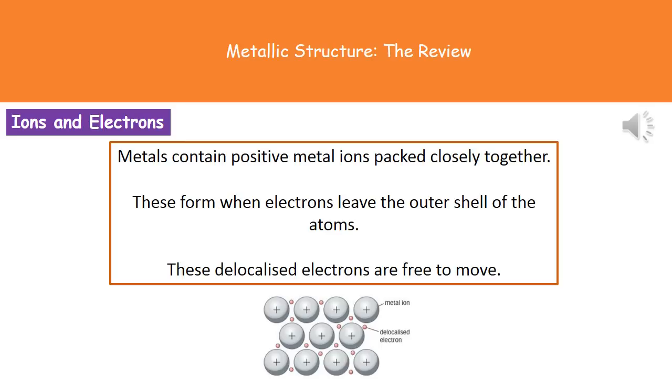They're actually free to move around that structure. So what we find then is that we can see that the positive metal ions are packed nice and closely together in that regular arrangement. And what we'll find then is that as those electrons leave the outer shell of the atoms we get those delocalised electrons which are able to move around freely. So as soon as the electrons move out of the atom then we get the positive charge on our metal ion and we get our delocalised electron.